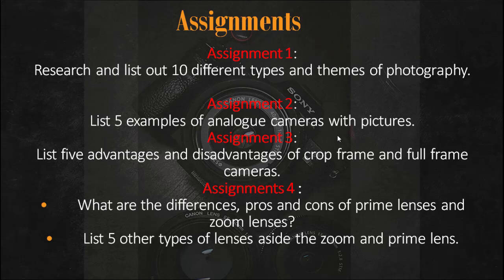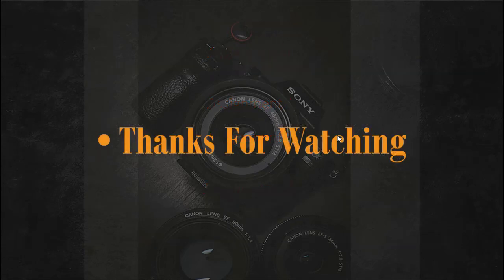We'll round up class here. Your assignment: number one, research and list 10 different types of photography. Number two, list five examples of analog cameras with their images. Number three, list five advantages and disadvantages of crop frame versus full frame cameras. Number four, what are the differences, pros, and cons of prime lenses versus zoom lenses. And last, list five other types of lenses aside from zoom and prime lenses. Thank you so much for being part of our class — see you in the next class, have a beautiful day and keep learning.